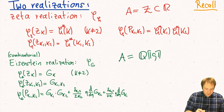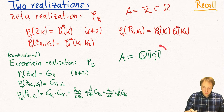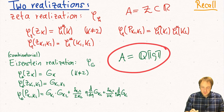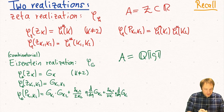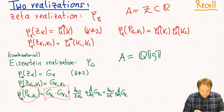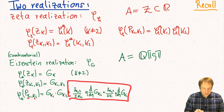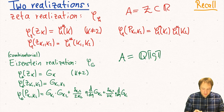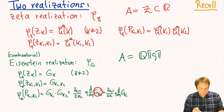Then we had the combinatorial Eisenstein realization, in which the depth-1 object gets mapped to the Eisenstein series gk, and the depth-2 object gets sent to the combinatorial double Eisenstein series, which we introduced last time as a linear combination of these q-series small g with rational numbers beta. We gave an explicit formula for this q-series. In this case the Q-algebra we consider is the Q-algebra of q-series with rational coefficients. For this Eisenstein realization, for each weight k we get a q-series in this Q-algebra, and p gets sent to the product of Eisenstein series, plus some modification if one of the k's is 2, because in those cases we also need to add some derivatives of these Eisenstein series.